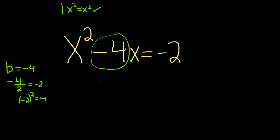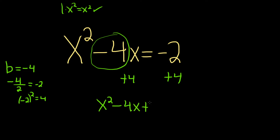Once you do that, you add it to both sides — that's called completing the square. So plus 4, plus 4. We have x squared minus 4x plus 4, and when you add these, you're going to get 2.